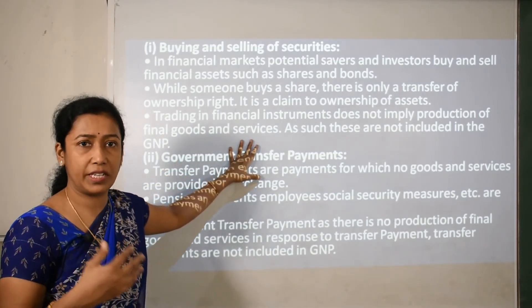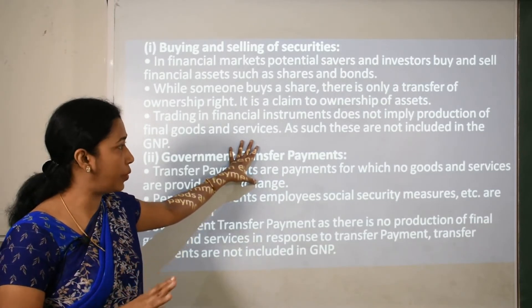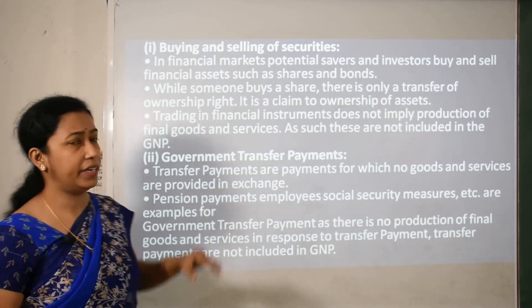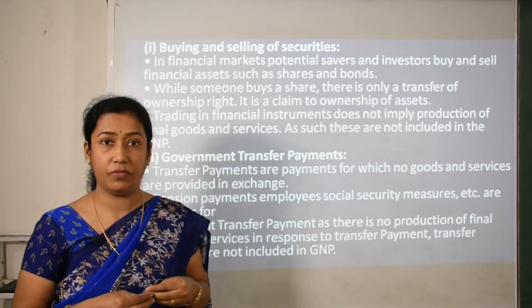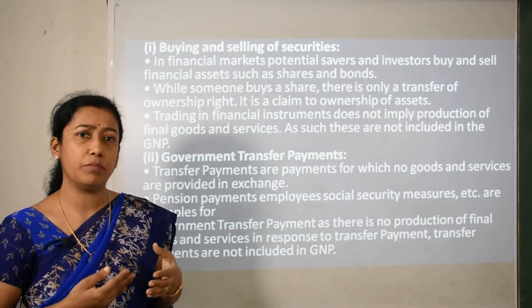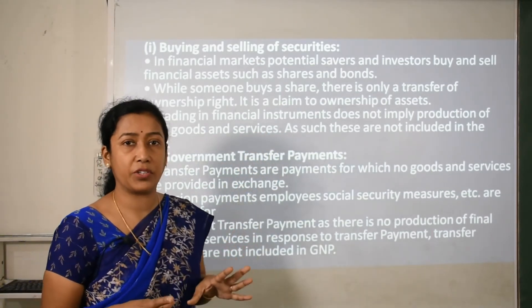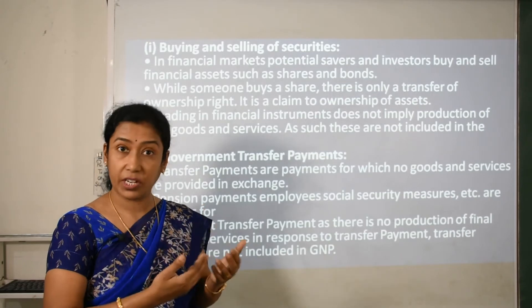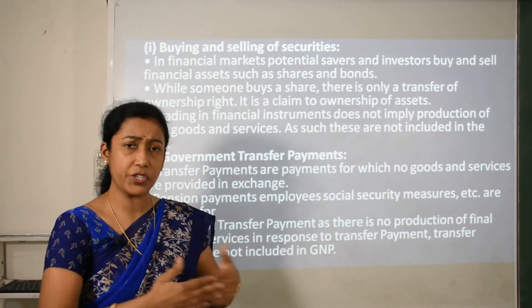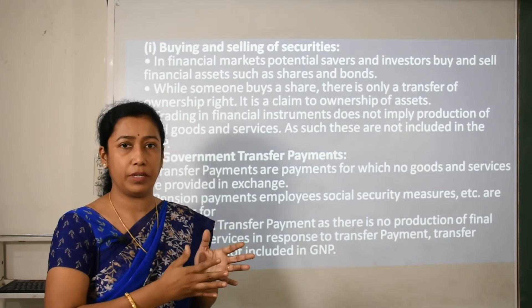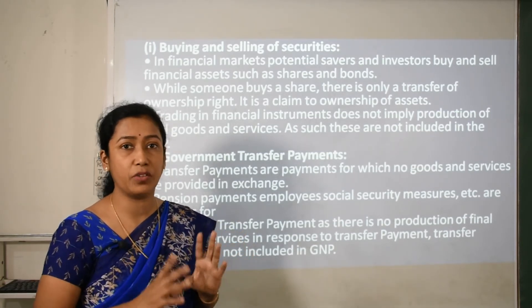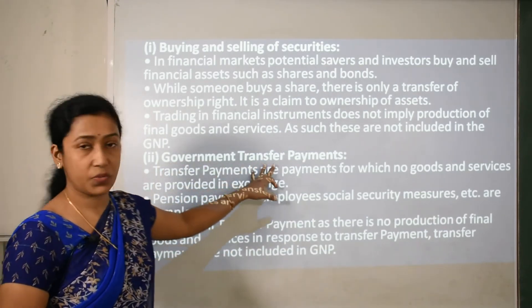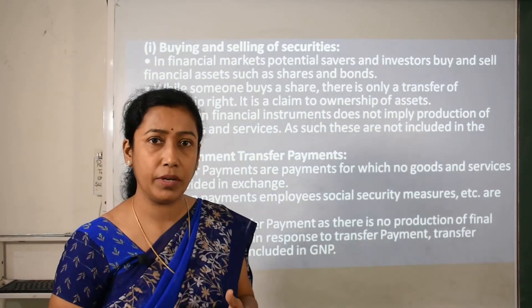Trading in financial instruments does not imply production of final goods and services. Whatever buying and selling of shares and bonds takes place is not production. Financial assets issued by a company in the financial market are not termed as production of goods and services, so they will not be included in GNP.